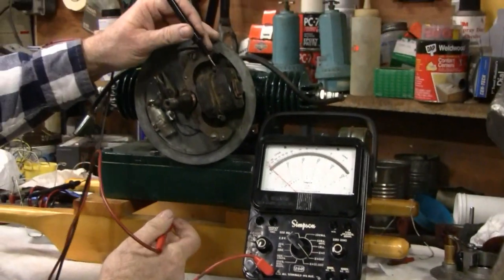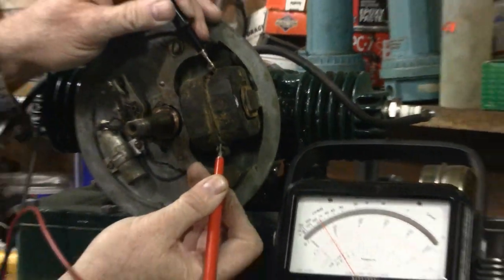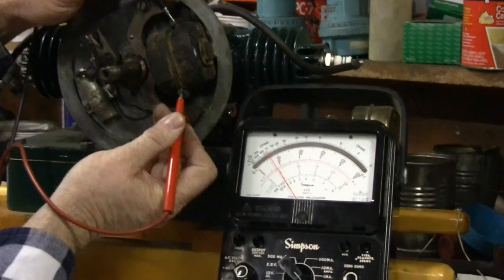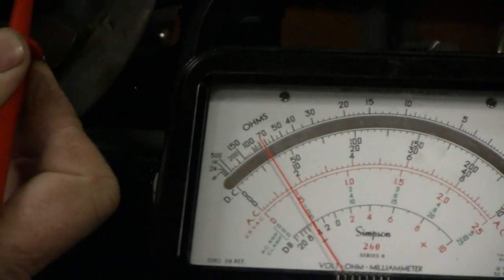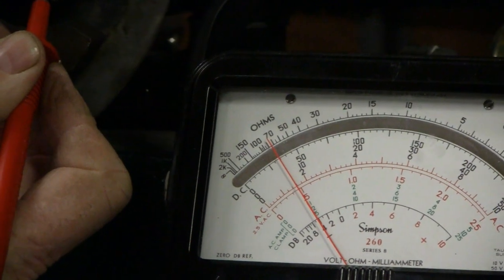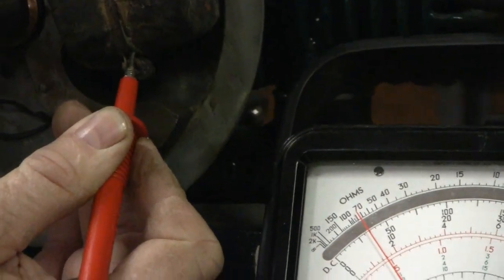And then all you have to do is check both ends, and I don't know if you can see that, that looks like right around 80, so 80 times 100 is 8,000 ohms, it's right in the ballpark there. So that shows you that mag is good.